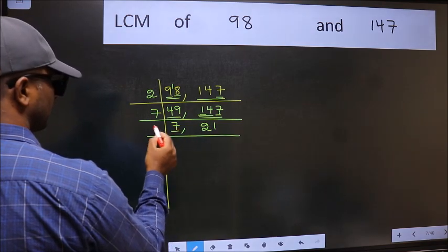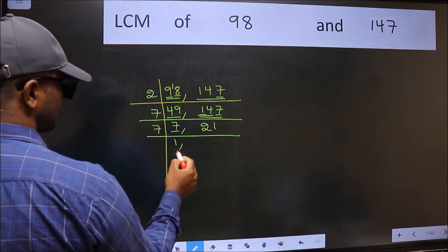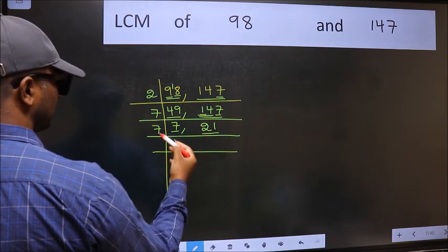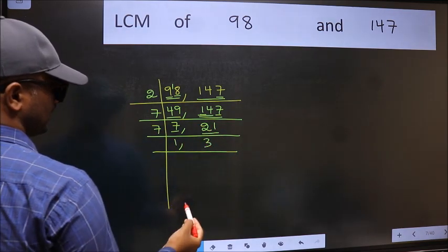Now here we have 7. 7 is a prime number, so 7 times 1, 7. The other number 21, when do we get 21 in the 7 table? 7 times 3 is 21.